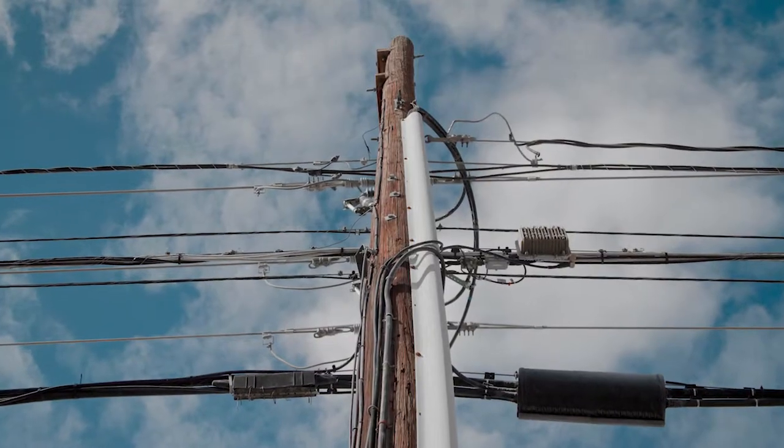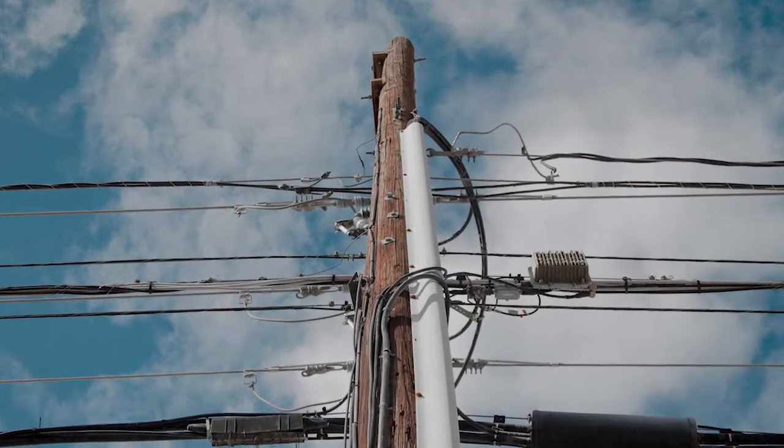However, the biggest issue that utilities have is riser poles. Keep squirrels and water from going down the pole.